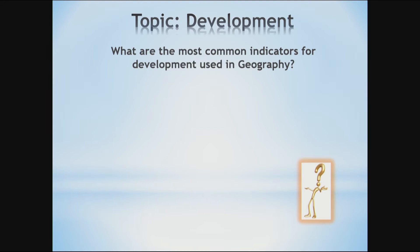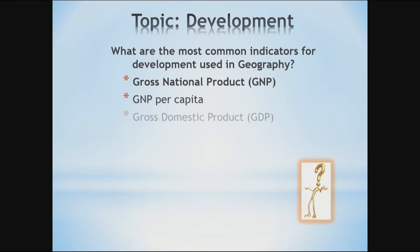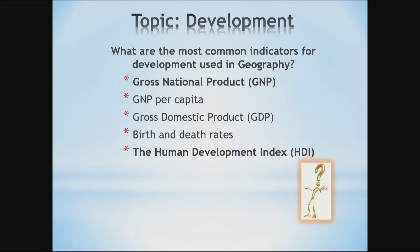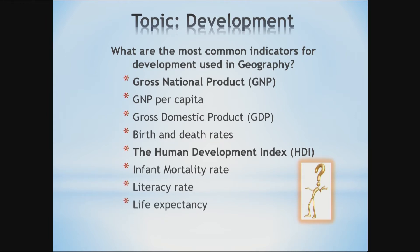Now, what are the most common indicators for development used in geography? Here we shall look at some of the most common indicators. We start with GNP — gross national product — GNP per capita, gross domestic product or GDP, birth and death rates, the Human Development Index, infant mortality rate, literacy rate, and life expectancy.